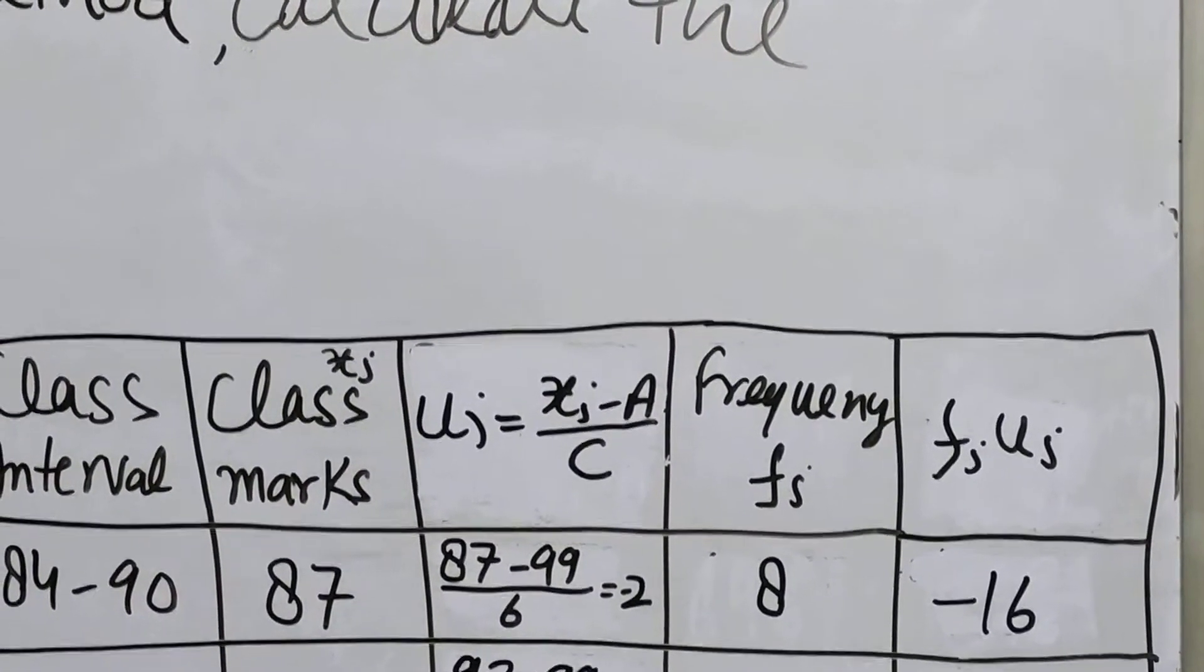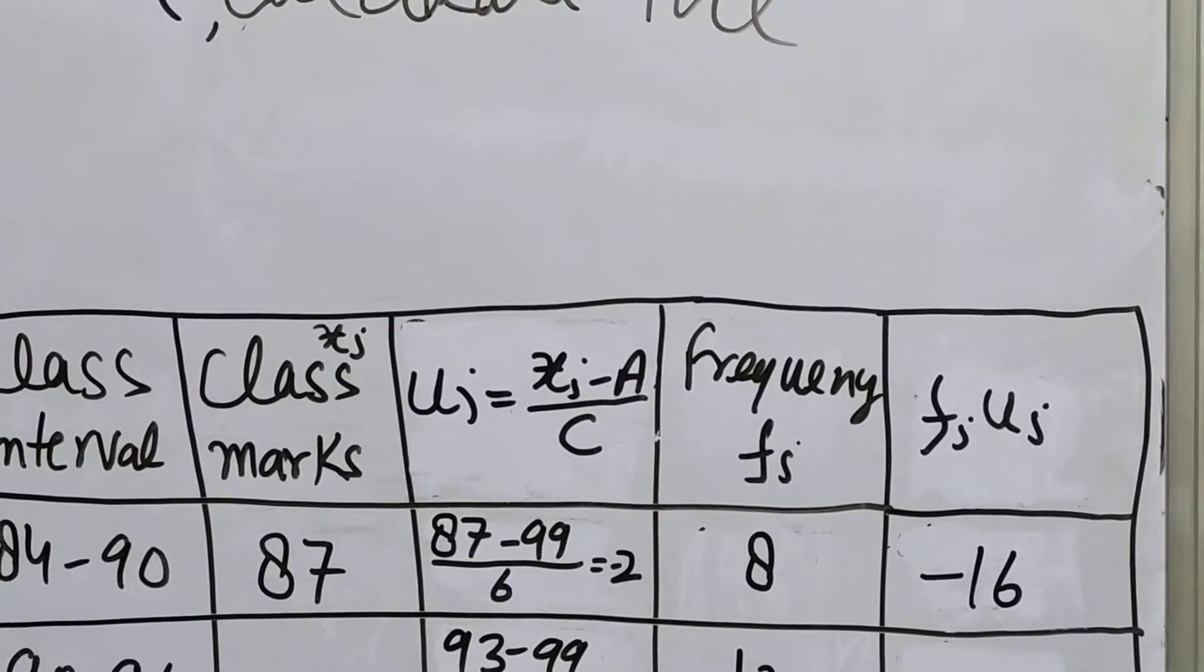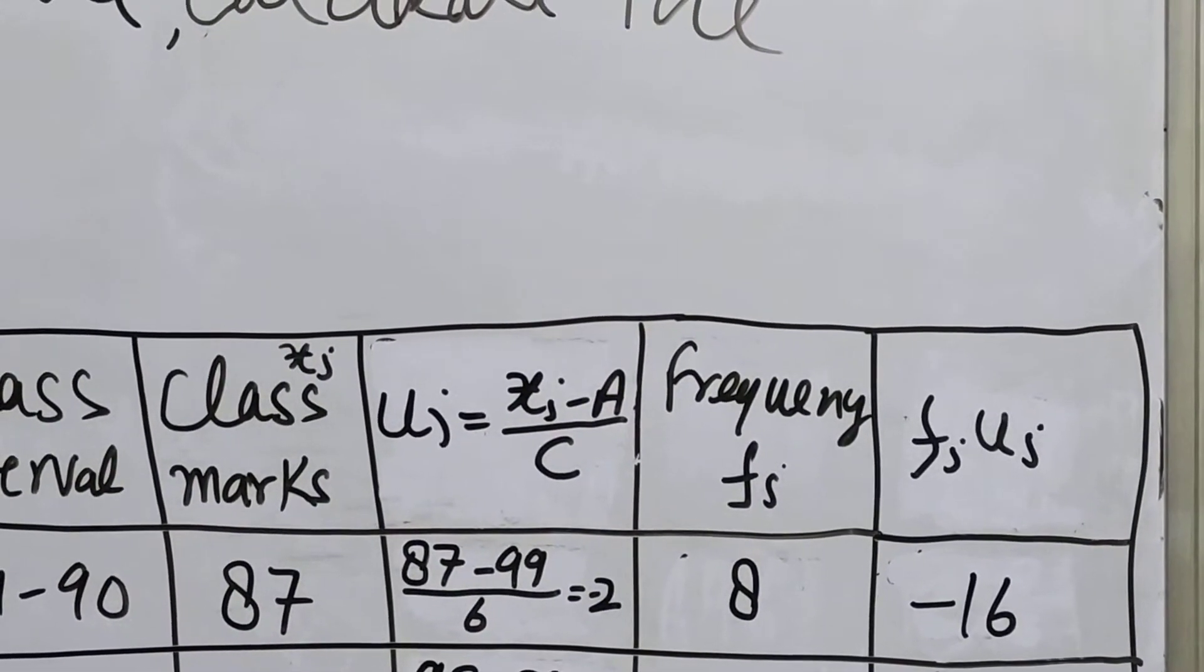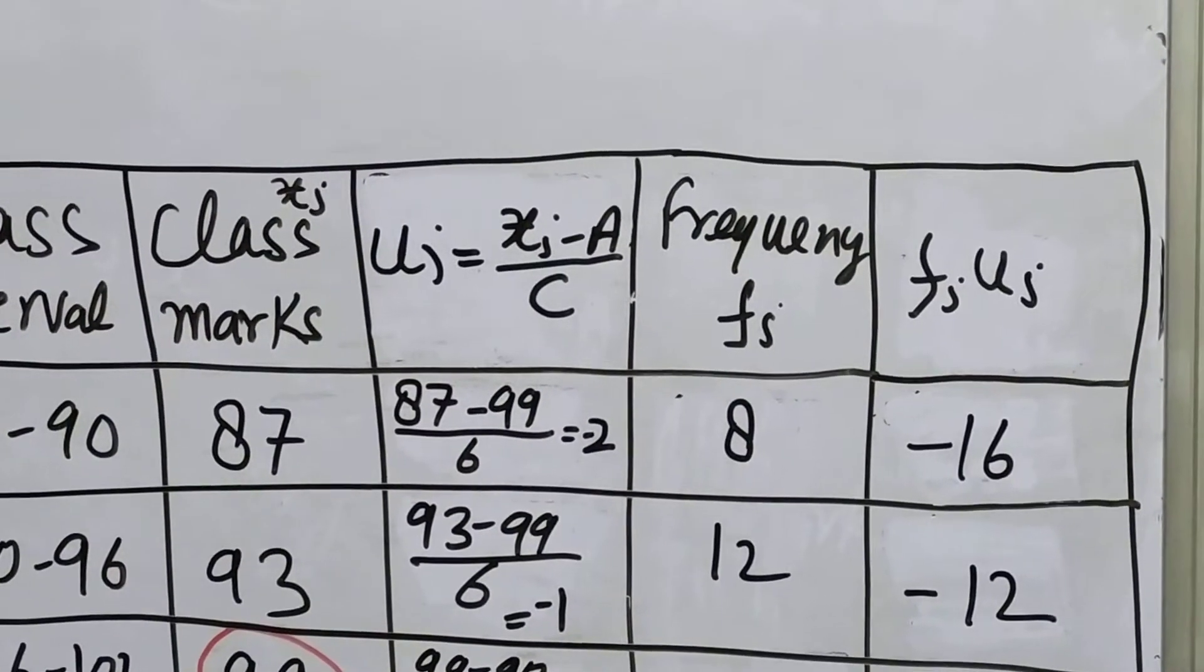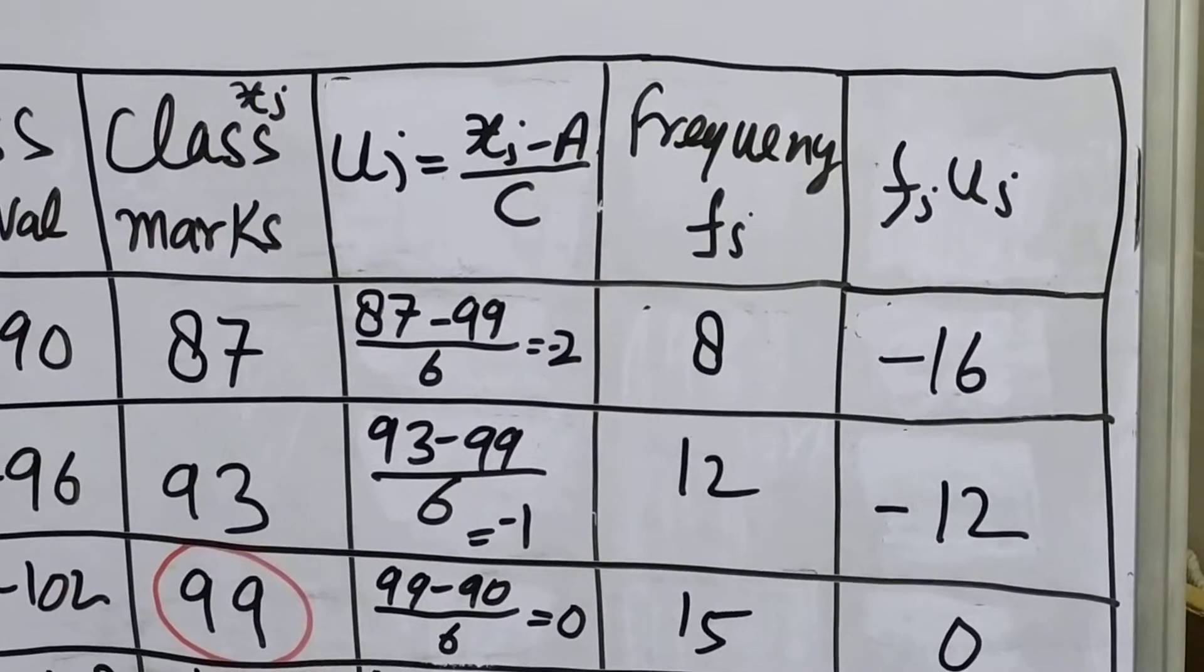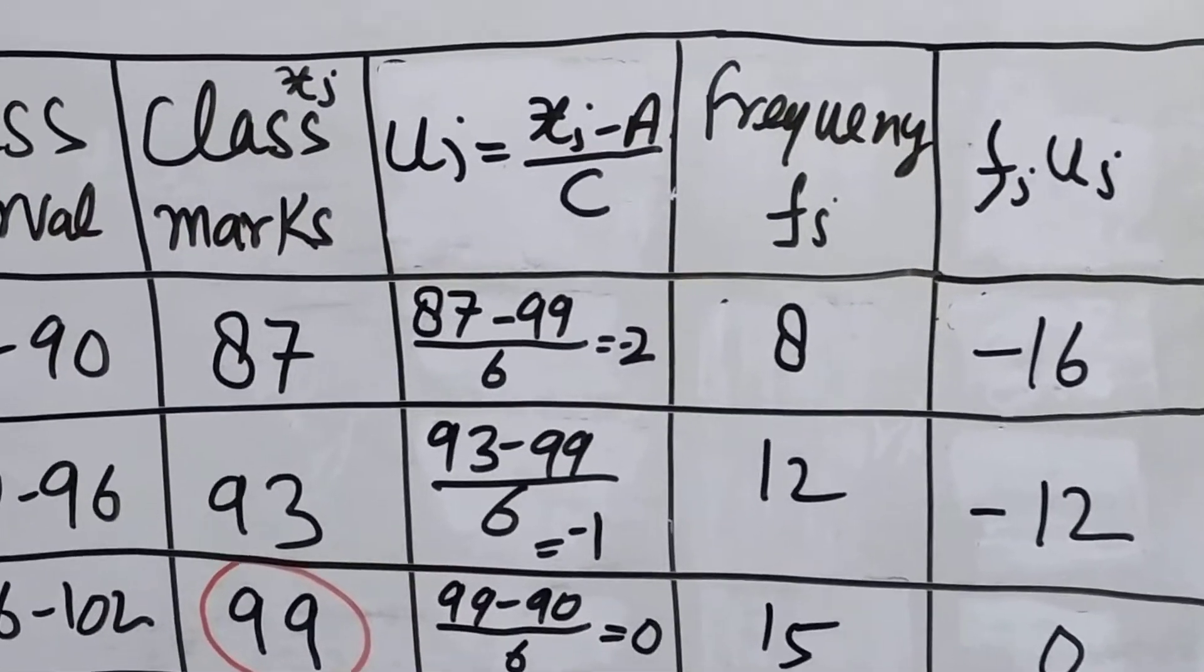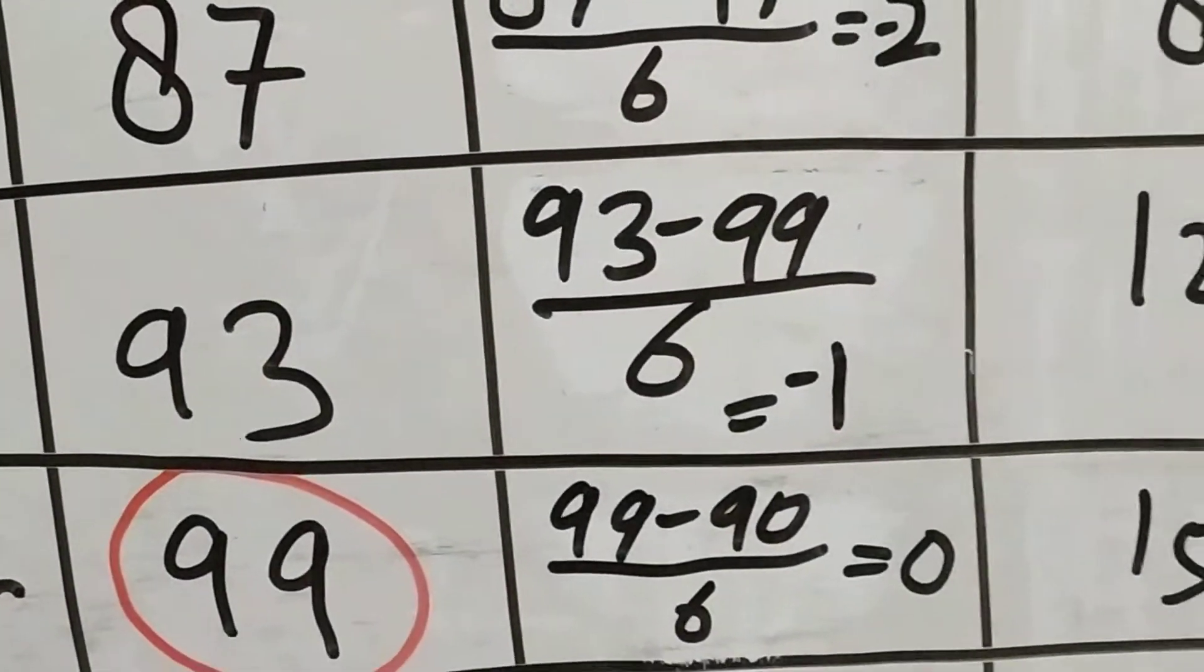Just see it. Only ui is to be calculated, the rest is given. So your ui is 87 minus 99 upon 6 equals minus 2. Similarly, this is 93 minus 99 upon 6, then 99 minus 99. I will repeat again, please check the calculation.